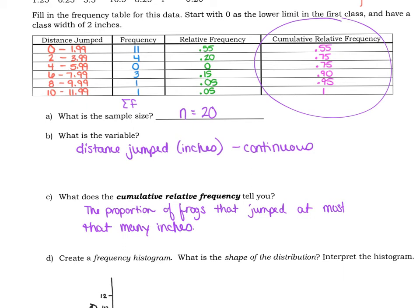For example, if we focus on this one right here, the 0.9 that I'm drawing an arrow at, that would mean that the proportion of frogs that jumped at most 7.99 inches is 0.9, or 90 percent of them jumped at most 7.9 inches. You could also say jumped less than eight inches and still get the same idea across.